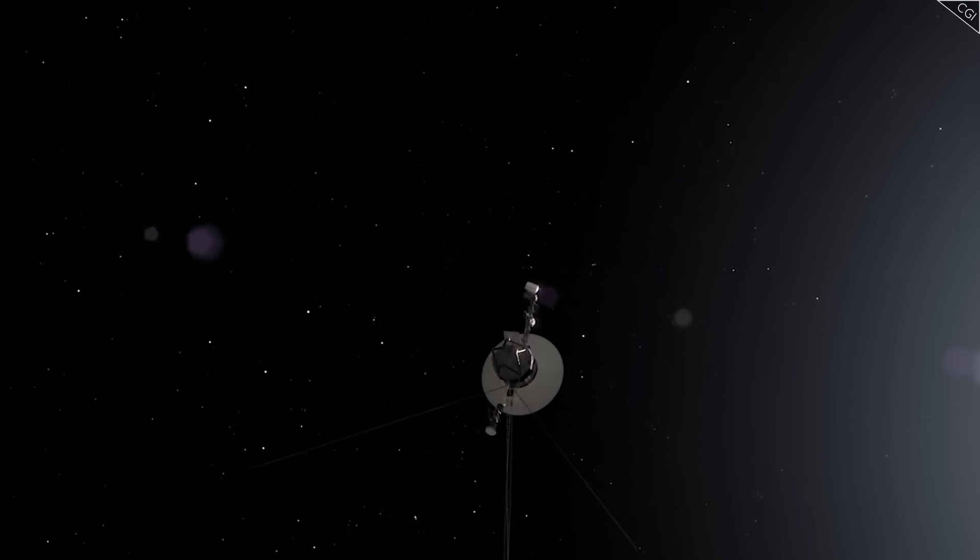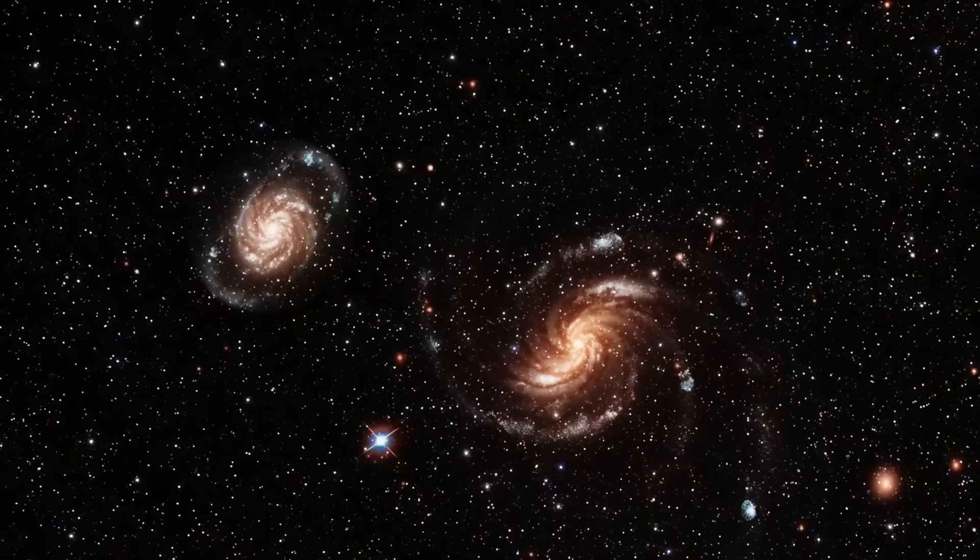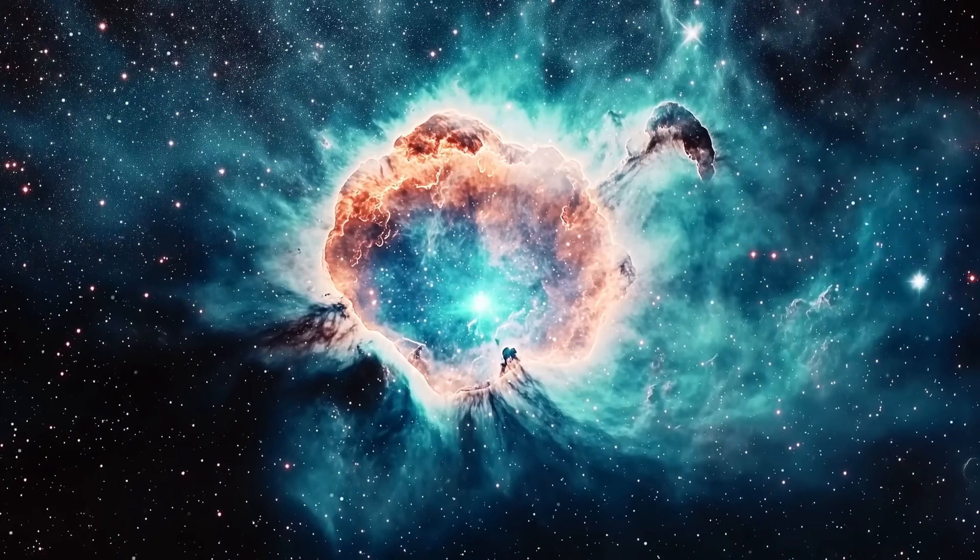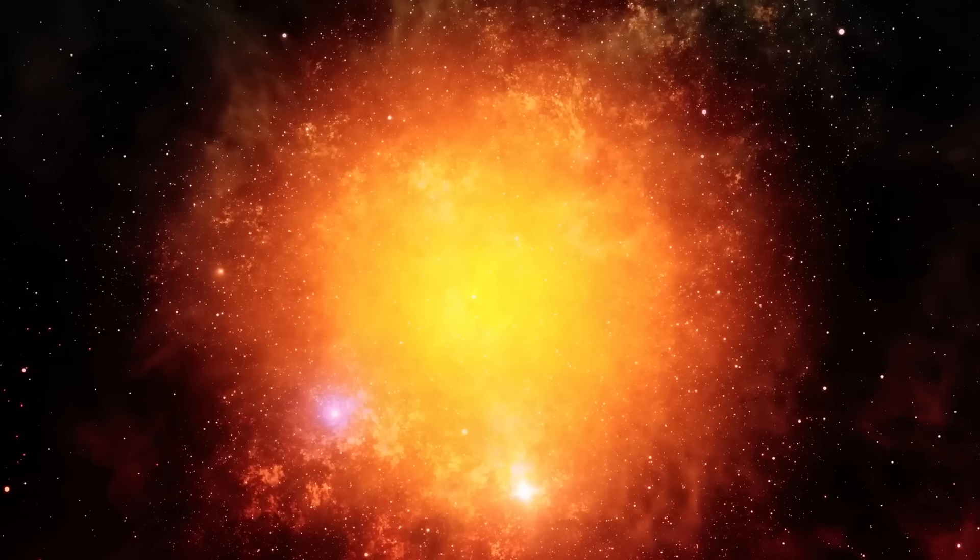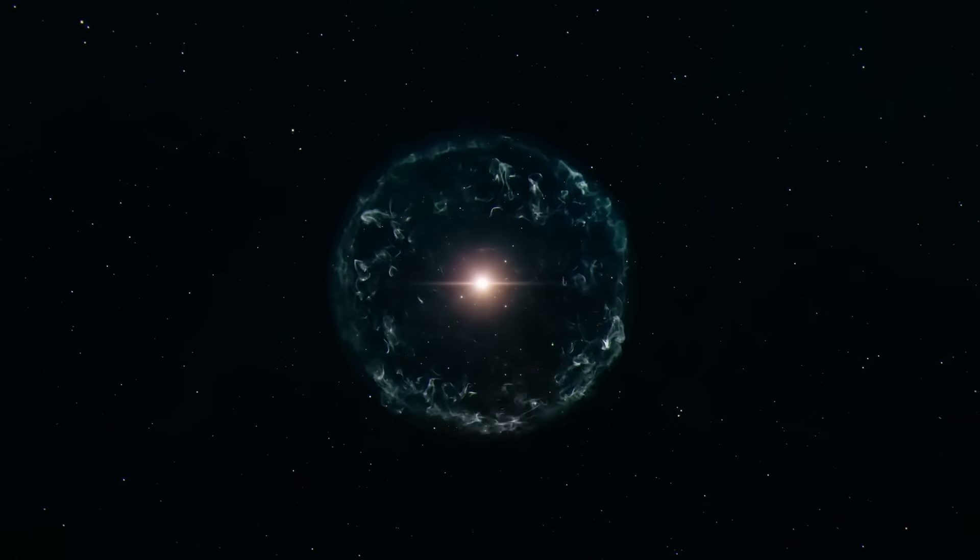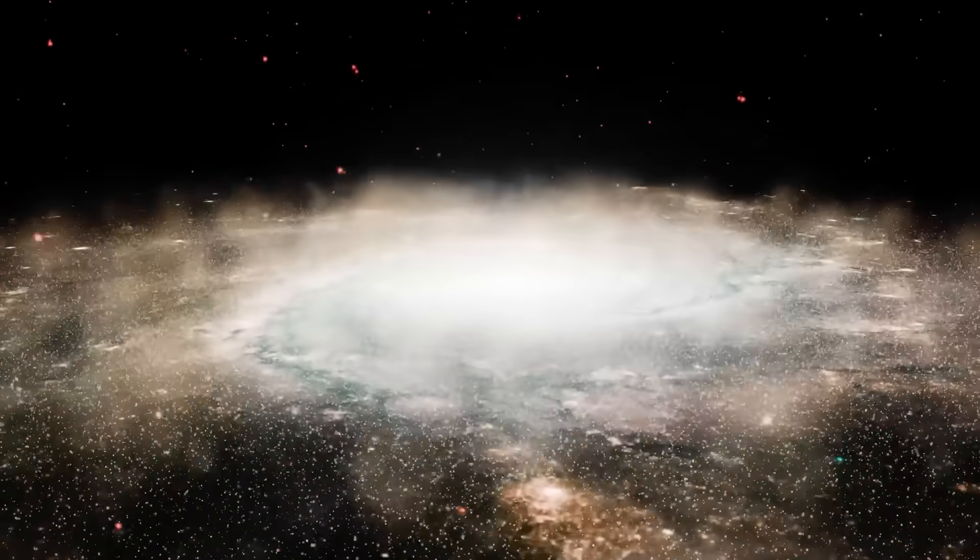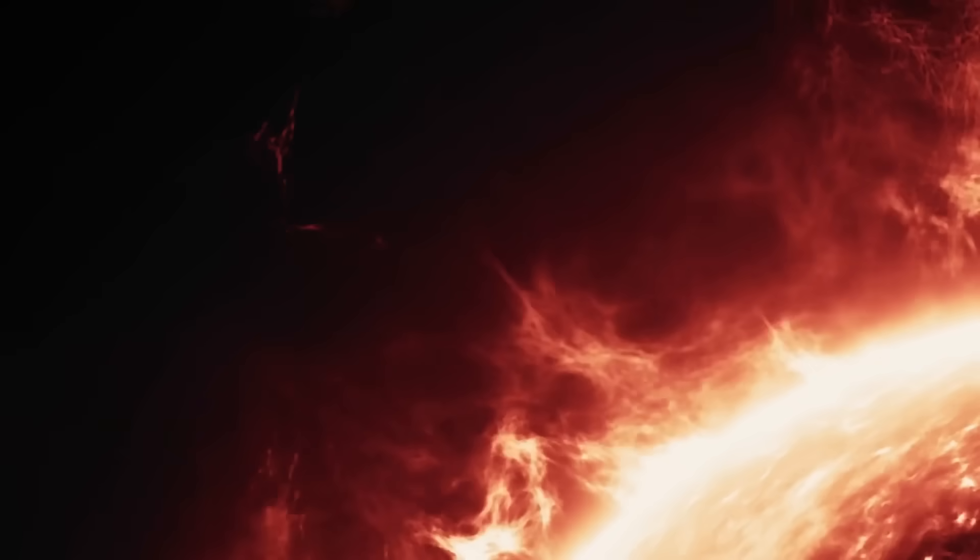And Voyager, aging, half-deaf, and powered by 1970s technology, is the only thing we've ever built that's brave enough to cross that line and keep reporting back. Its discoveries are peeling back the illusion that we ever truly understood where we lived. The protective bubble of our heliosphere isn't just a cosmic boundary, it's a cradle, a cocoon. And beyond it lies an environment shaped by ancient explosions, invisible currents, and magnetic scars left by stars long dead. What Voyager has found isn't fantasy. It's not alien ships or wormholes, it's something more real, and maybe more terrifying. It's the realization that we've always lived in a fragile oasis, floating in a sea far more violent, dynamic, and complex than we ever dared to imagine.